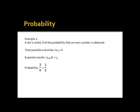Let us proceed to example one. A die is rolled. Find the probability that an even number is obtained. In a die, there are 6 total possible outcomes, so 6C1 is equal to 6. And in a die, there are 3 even numbers, that is 2, 4, and 6. So there are 3 expected results. The probability that an even number is obtained is 3 over 6, which is also equal to 1 half.